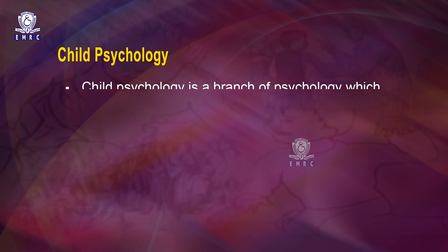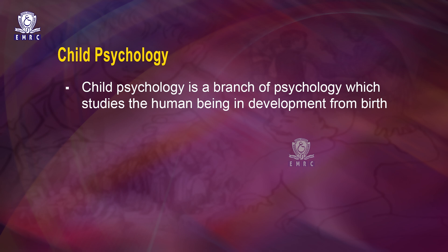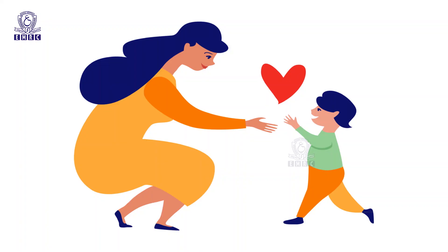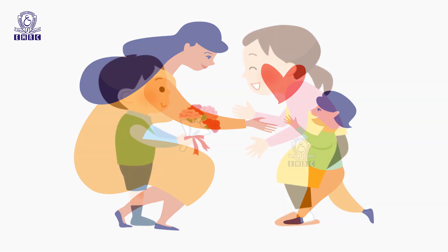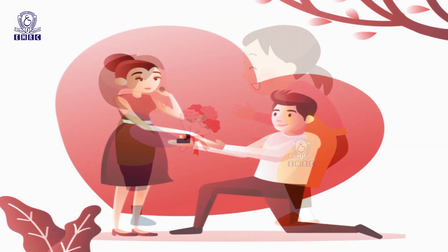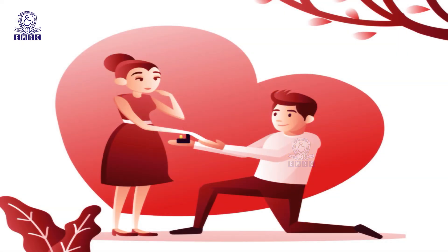According to James Draver, child psychology is a branch of psychology which studies the human being in development from birth to maturity — that is, innocence to awareness of things. For example, saying 'I love you' to a mother: at early childhood, the meaning of love to a mother would be different, and when the child grows up, the meaning of love to a mother and to others would be different. So, awareness — innocence to awareness.